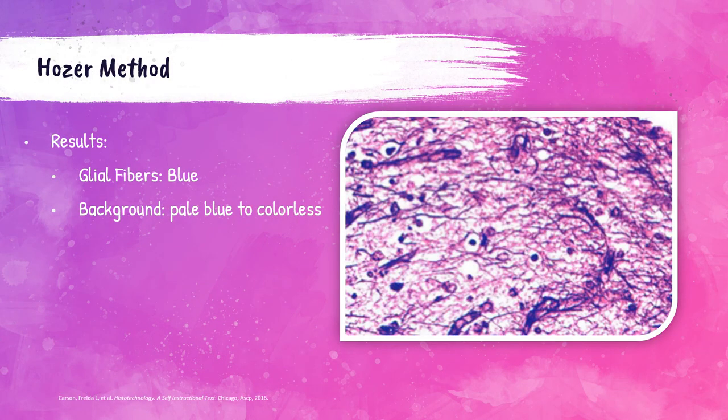When stained using the Holzer method, glial fibers will be blue and the background will be very pale blue to colorless. A photo shows glial fibers clearly visible as blue lines within the tissue.